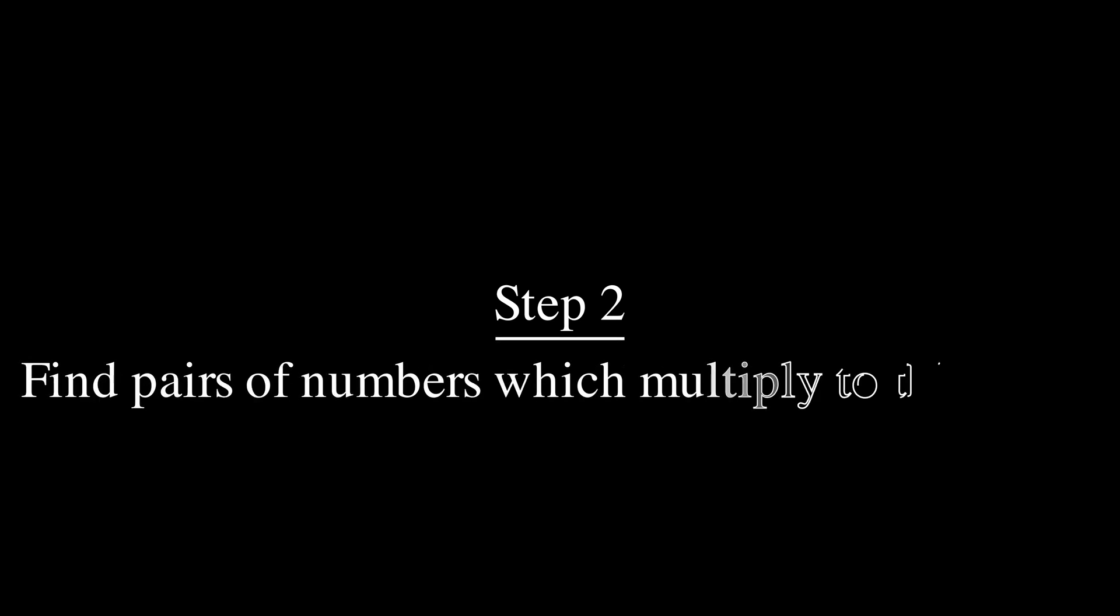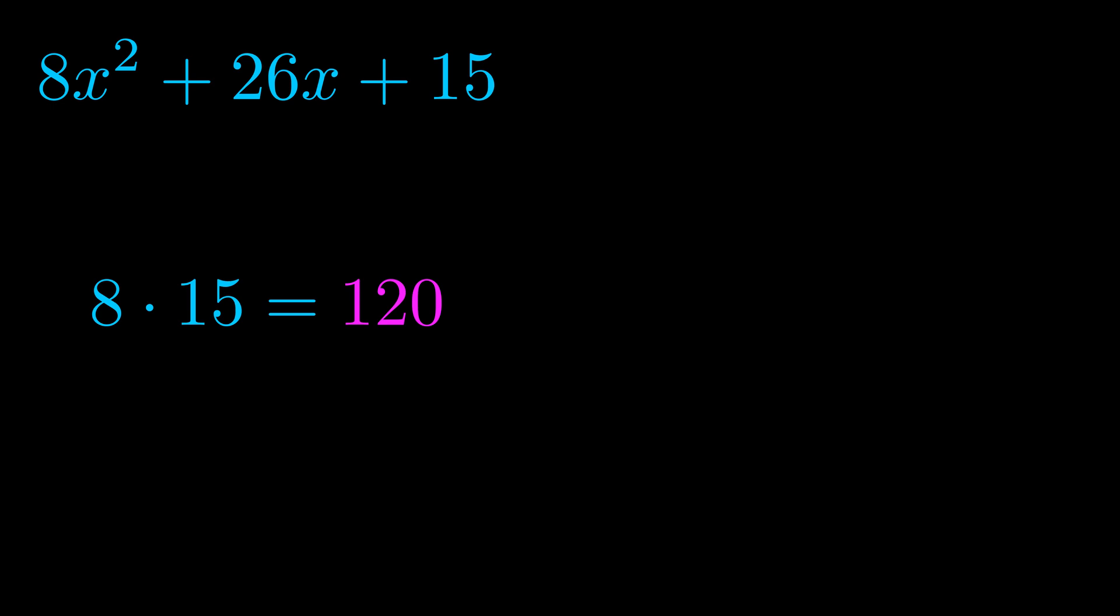Step two is to try to find all of the pairs which multiply to this number. Now it turns out you don't really need to find all of them, but go ahead and write down as many numbers as you can that multiply to the magenta value for now. Pause the video and resume when you're ready to continue. Okay, here's what I came up with.